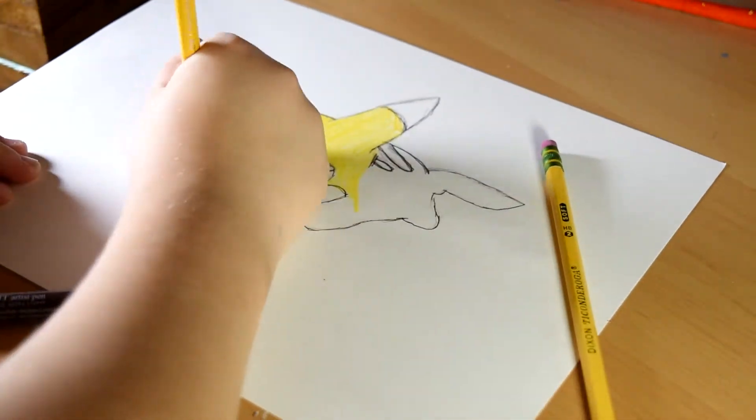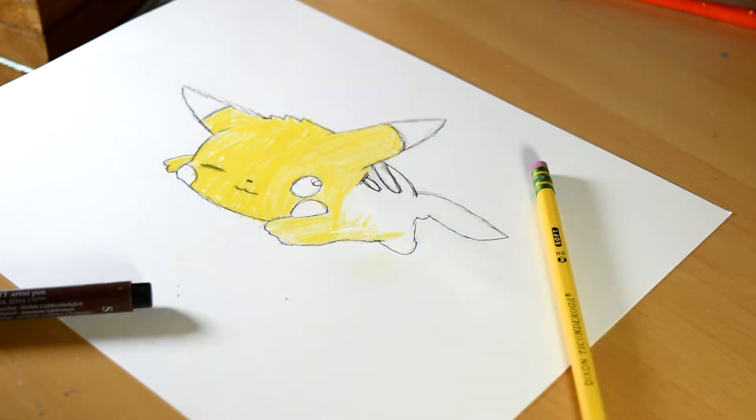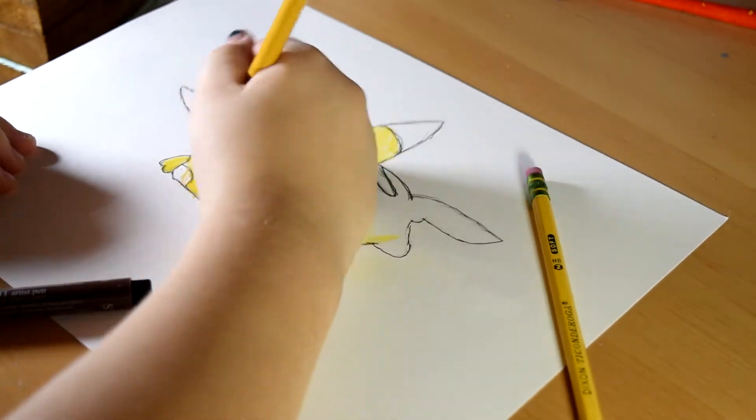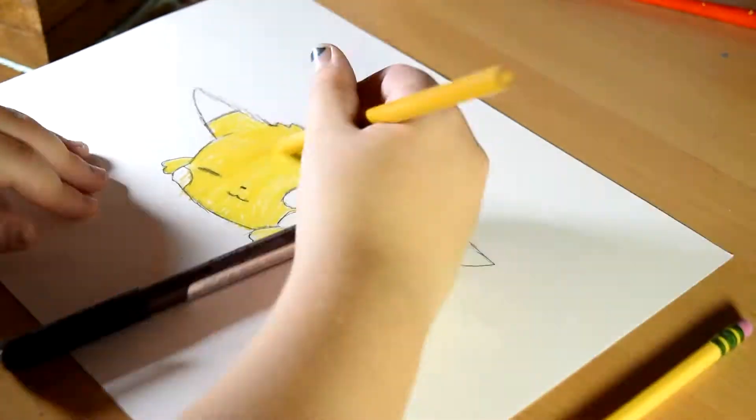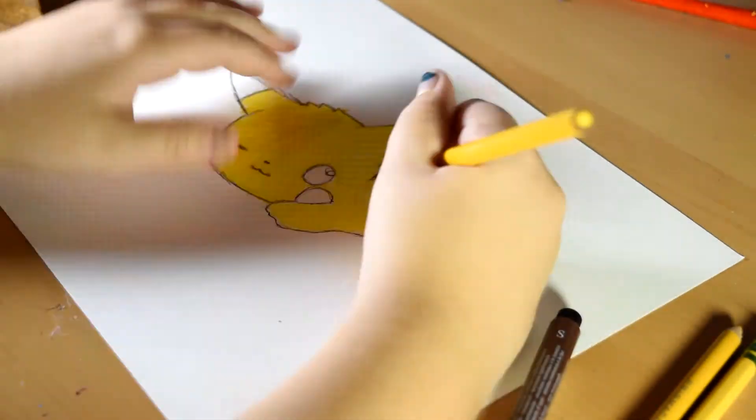So then, you used Prismacolors? I used Prismacolor colored pencils to color in the basic body. And then I used yellow to do the body,